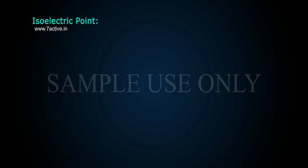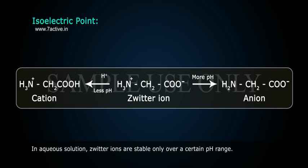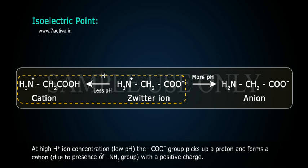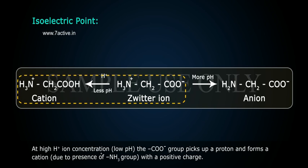Isoelectric point. In aqueous solutions, zwitterions are stable only over a certain pH range. At high H+ ion concentration — low pH — the COO⁻ group picks up a proton and forms a cation due to the presence of the NH₃⁺ group, giving it a positive charge.